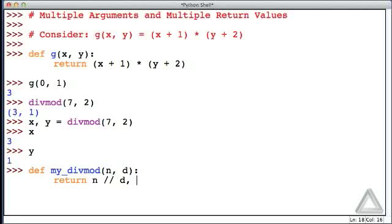And then also the modulo operation, n mod d. Then hit return twice. Now that function is defined. Let's put it to the test. Let's call my_divmod with an argument of seven and two.